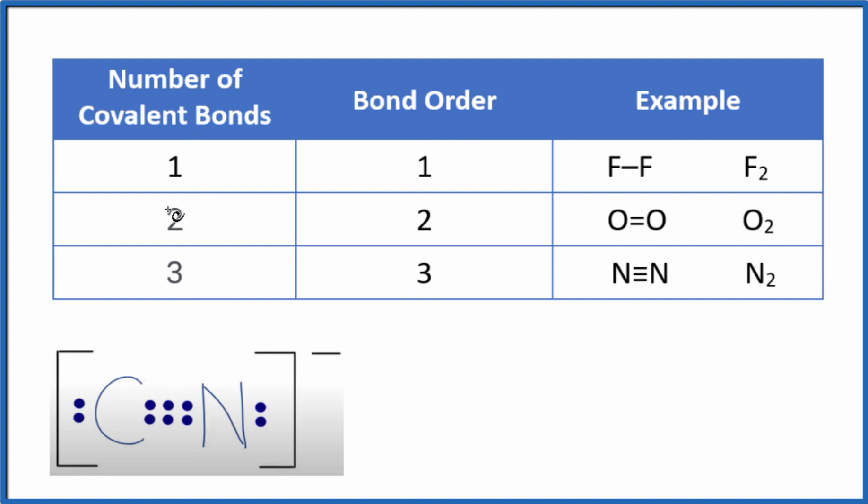So if we have one bond, we have a bond order of one. Two bonds would be two. And here we have one, two, three pairs of electrons shared. So we have three bonds. That means the bond order for CN minus is going to be three.